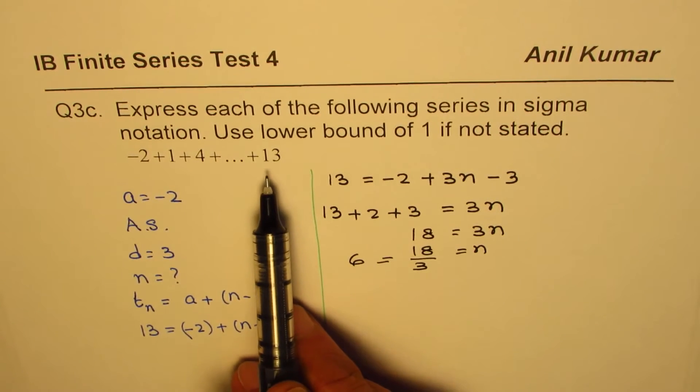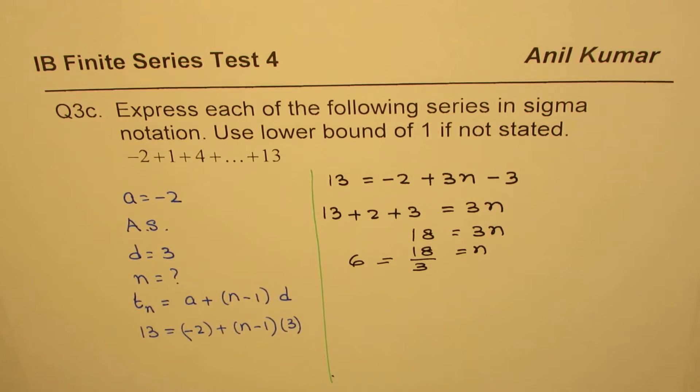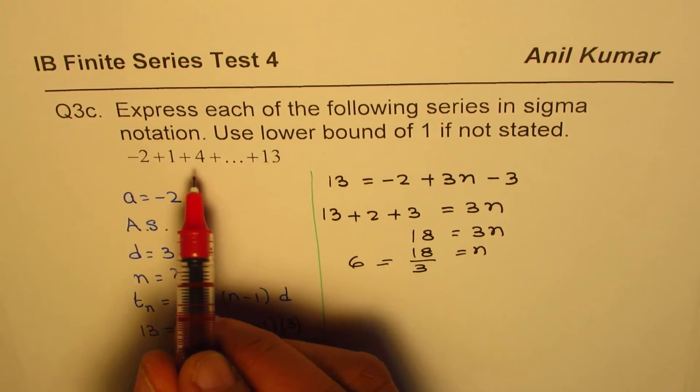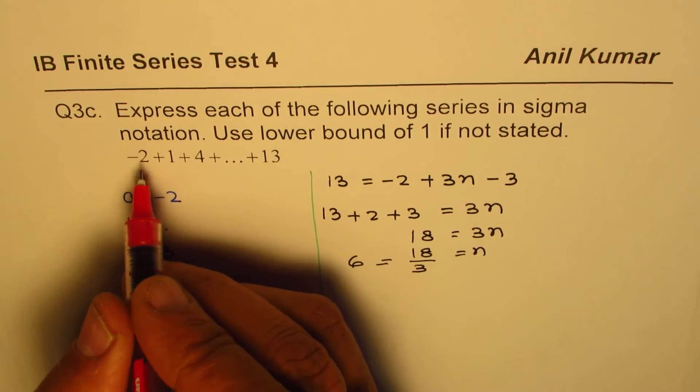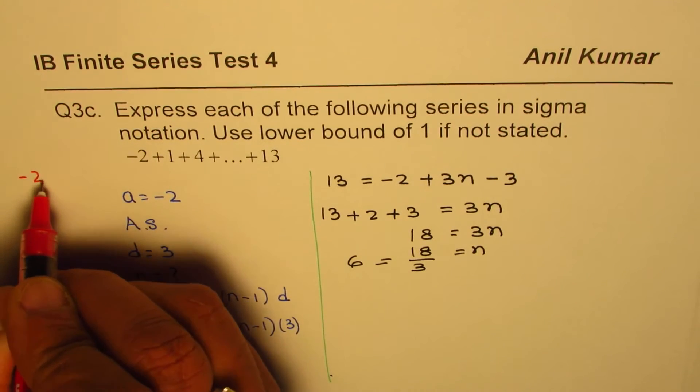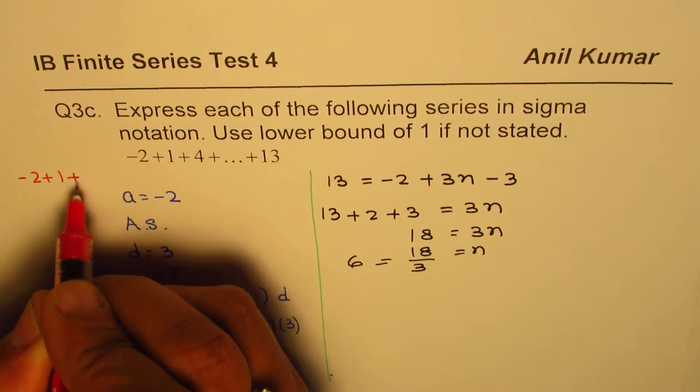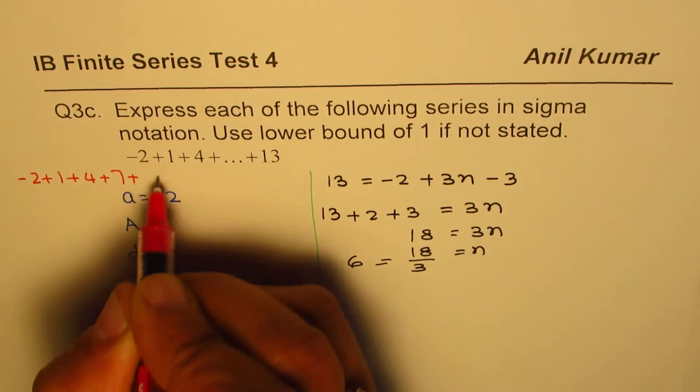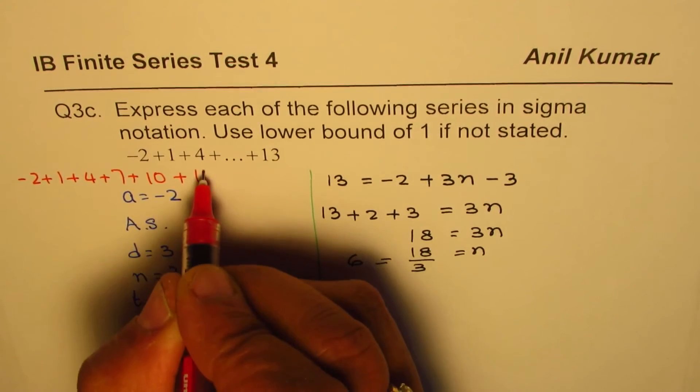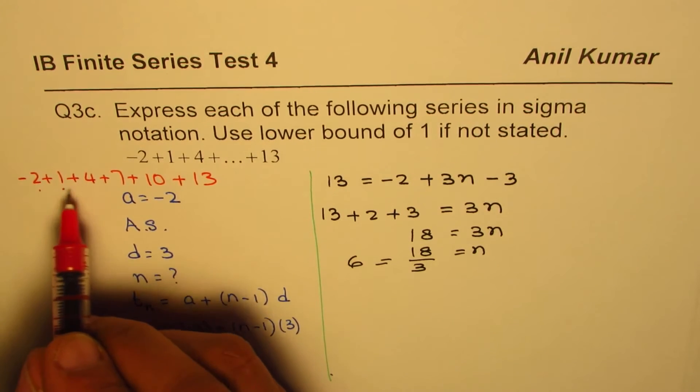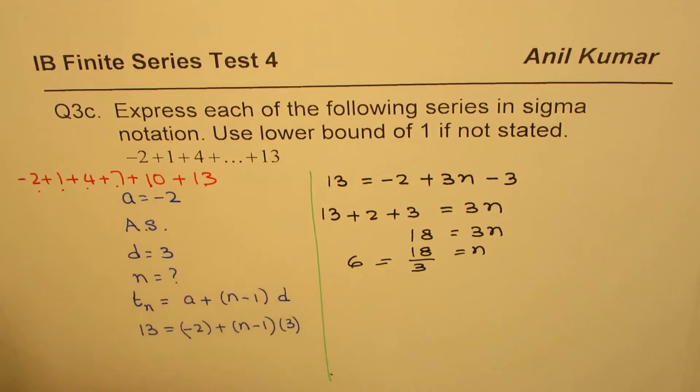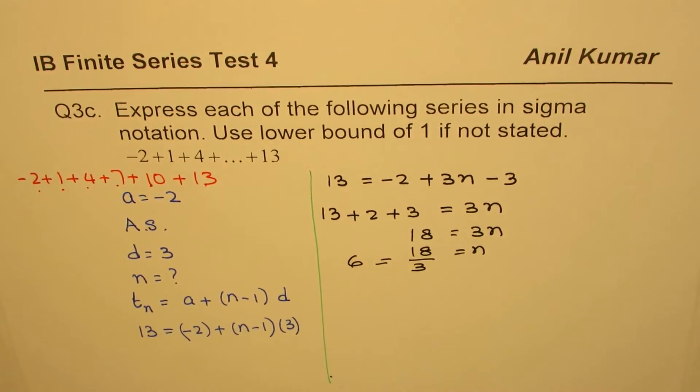So we know here it is the sixth term. Some of you could have even added 3 extended till 13. So we could write the series as: -2 + 1, we are adding 3, plus 4 + 7 + 10 + 13. So you get 1, 2, 3, 4, 5, 6. Exactly the same number.